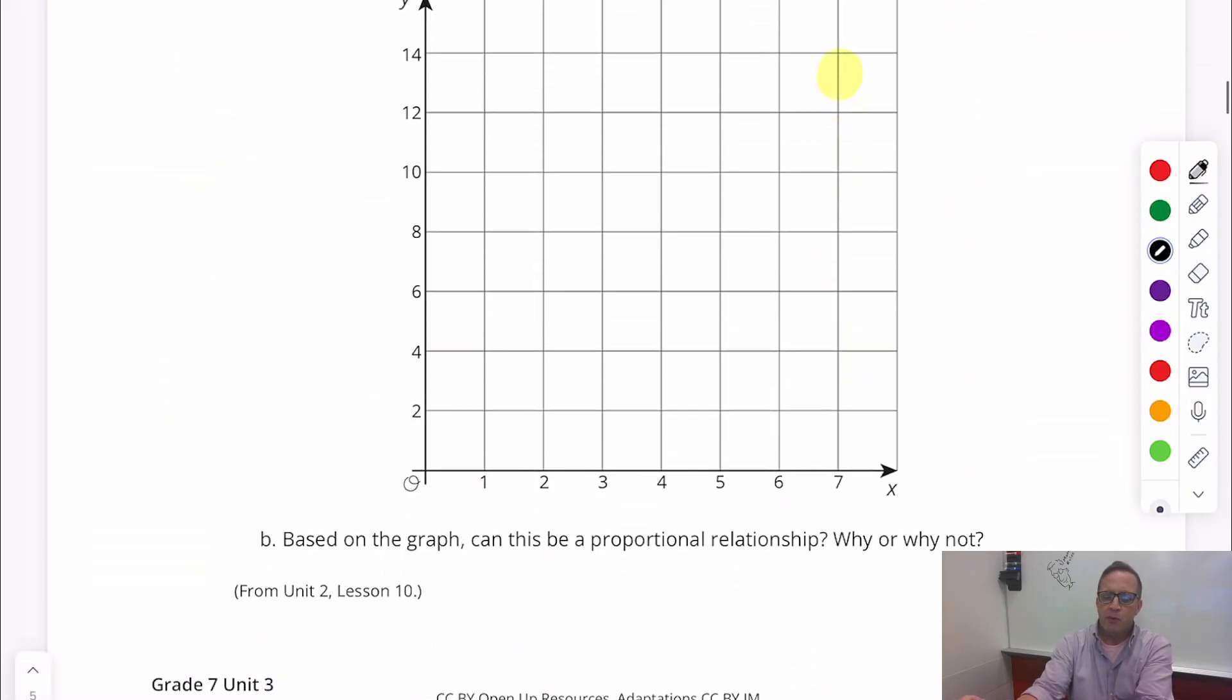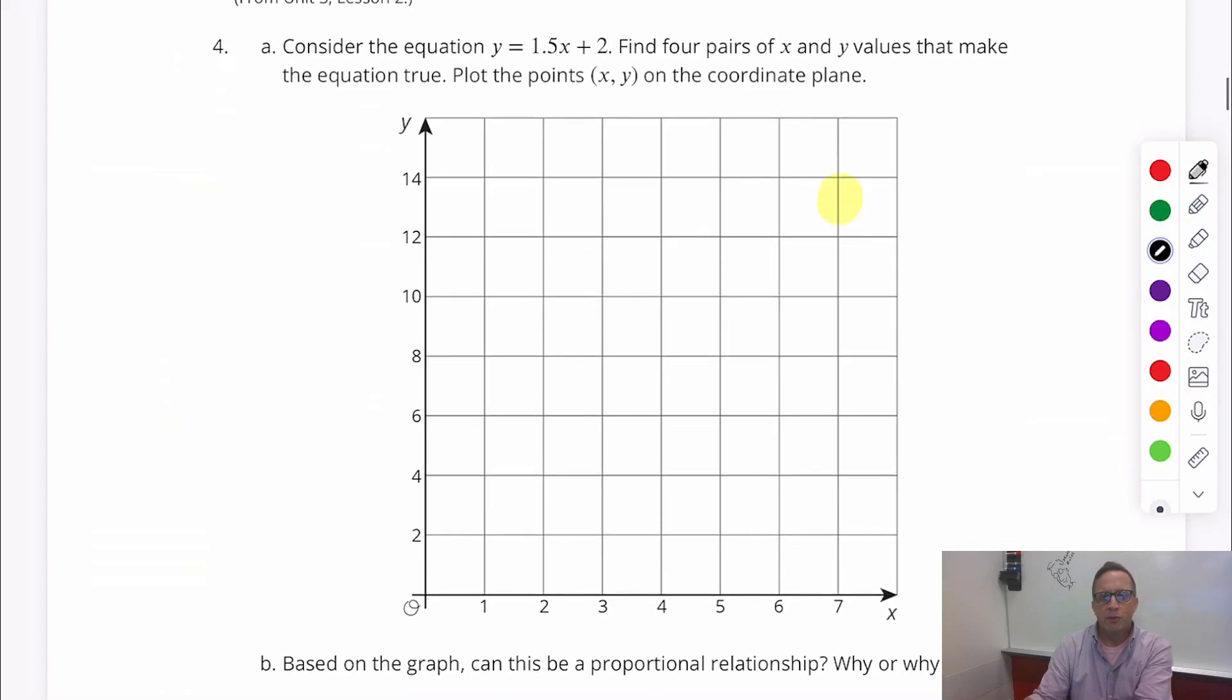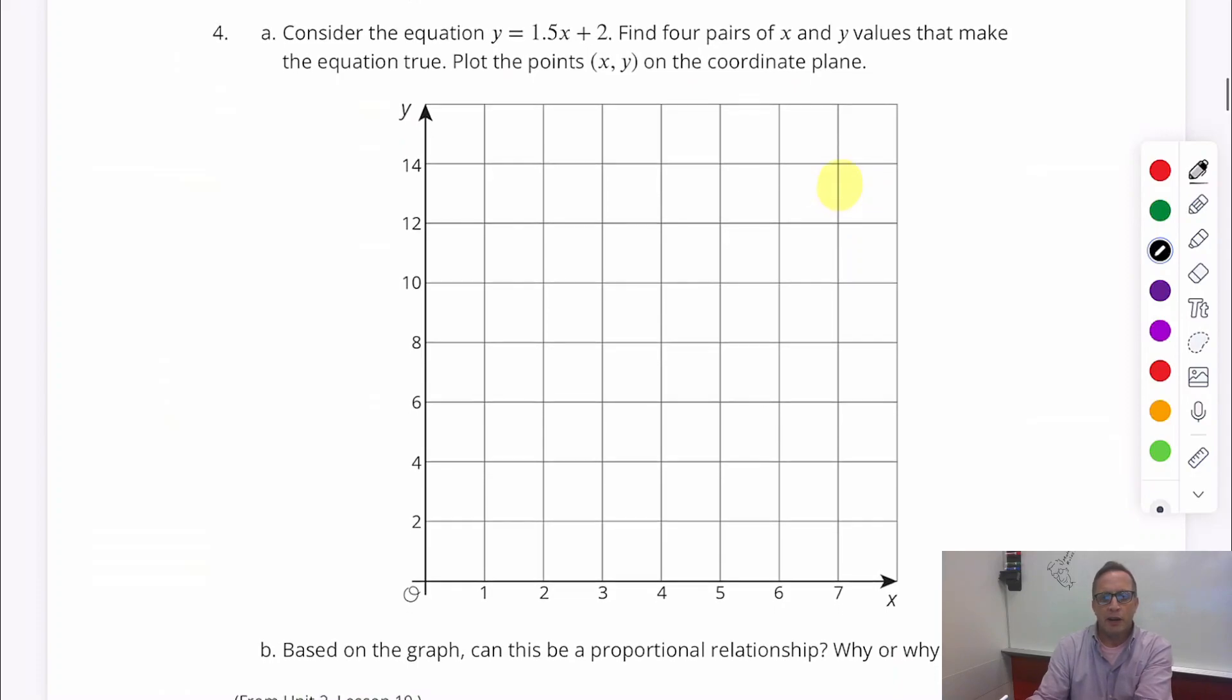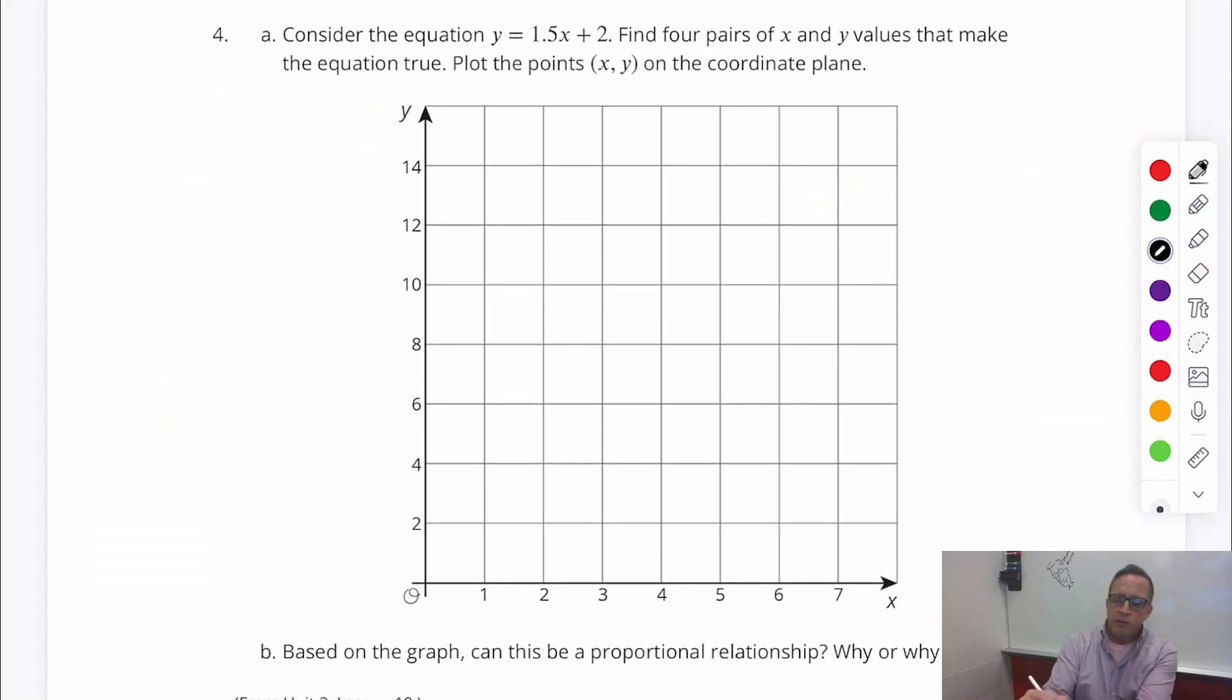Alright. I think we're finished with that one. Number four. A, consider the equation. Y equals 1.5X plus 2. Find four pairs of X and Y values that make the equation true. Plot points, X and Y on the coordinate plane. I know these are a lot of words. These sometimes get a little bit intimidating. Maybe kind of overwhelming with all the verbiage here. But, what we just need to do is we need to find some inputs and outputs. That's what we've got to do. So, I'm going to make an input-output table.